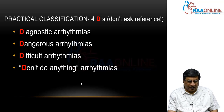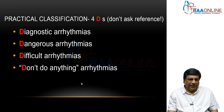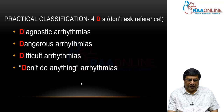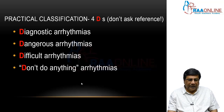Because of this huge classification confusion, I thought we would remember just four Ds — this is our own device, so don't ask for a reference. D for diagnostic arrhythmias, the next D for dangerous arrhythmias, the next D for difficult arrhythmias, and the fourth is 'don't do anything' arrhythmias. We will classify arrhythmias in ACS into these four Ds and look at the ECGs and management in each of these four segments.